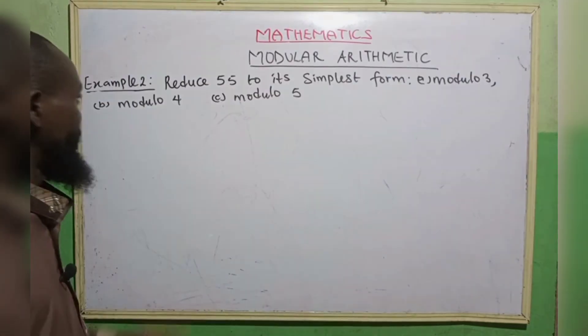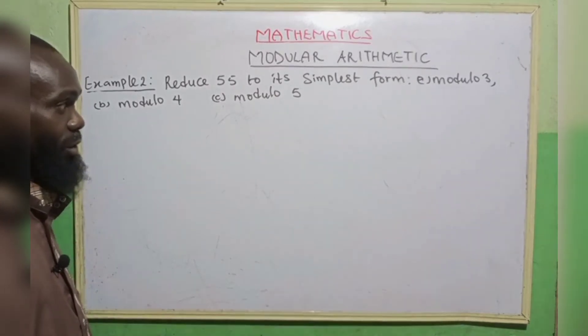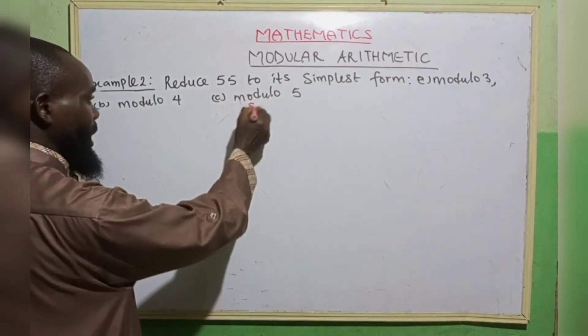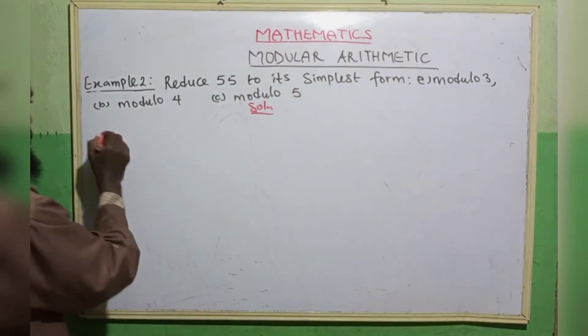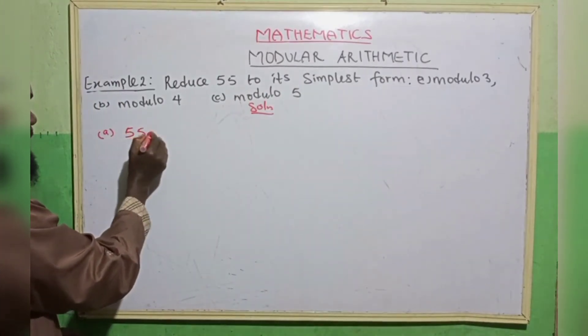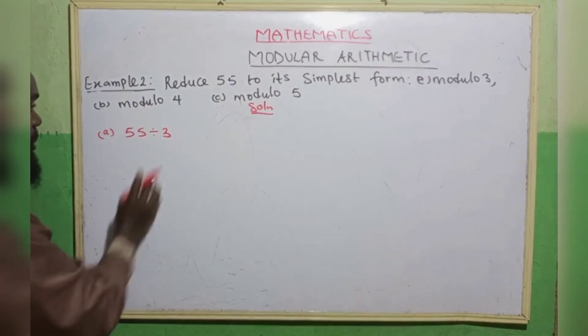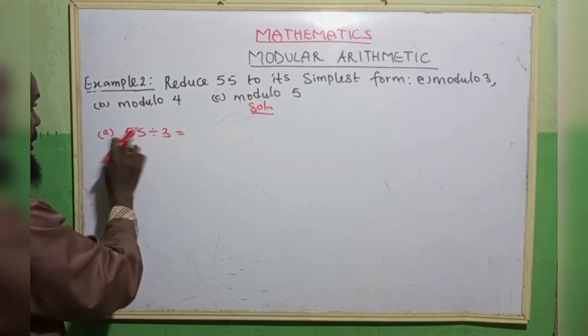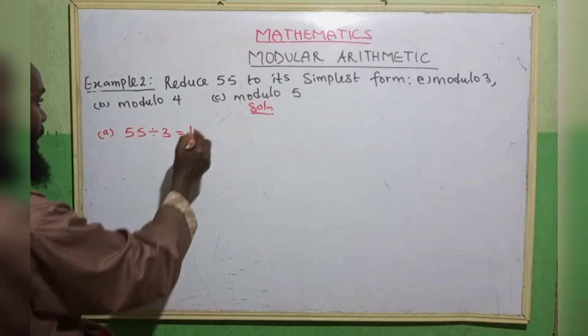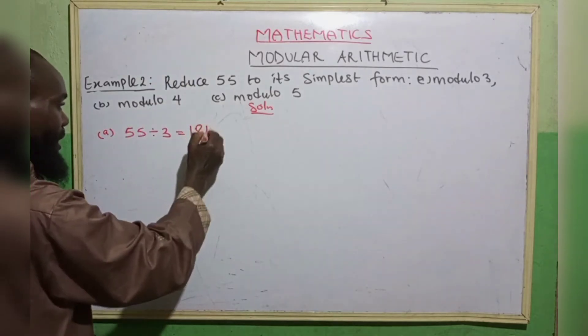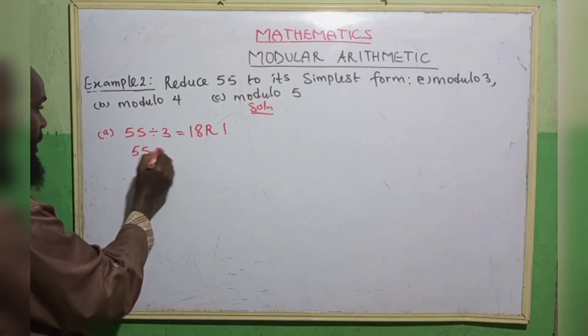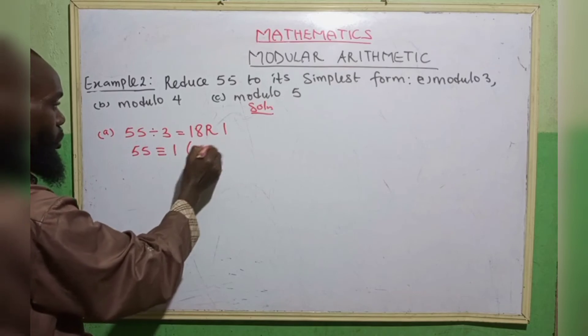Example 2. Reduce 55 to its simplest form. A, modulo 3. B, modulo 4. C, modulo 5. So we have the first one. We want to reduce 55 by modulo 3. So we say 55 divided by modulo 3. So 3 goes in 55. In 5 we have 1. In 25 we have 8. That is 24. Remainder 1. So which means 55 is equivalent to 1 in modulo 3.